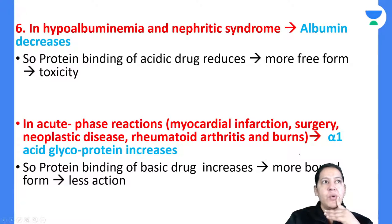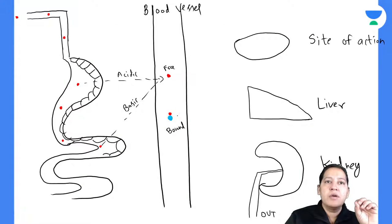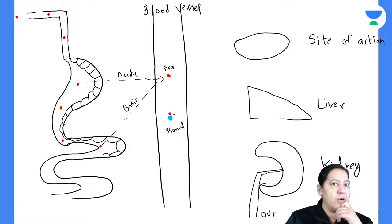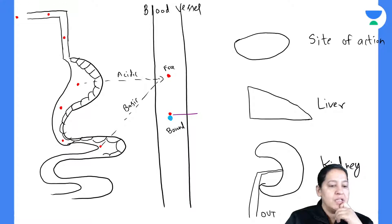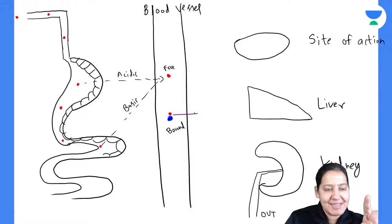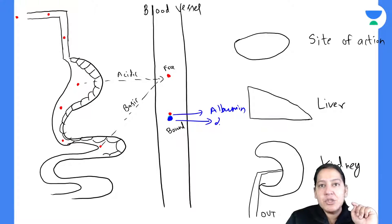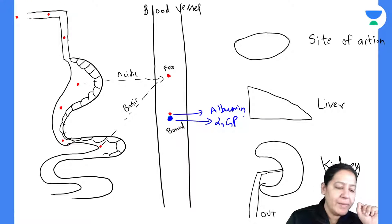Acidic drugs bind to which protein and basic drugs bind to which protein? The blue in the diagram represents the protein. If the drug is acidic, it binds to albumin. If the drug is basic, it binds to alpha-1 glycoprotein.